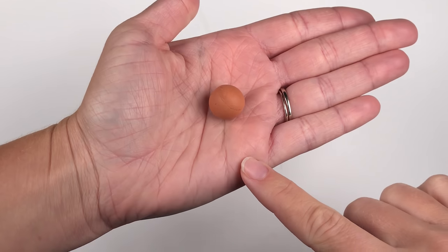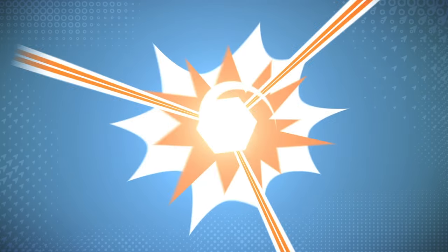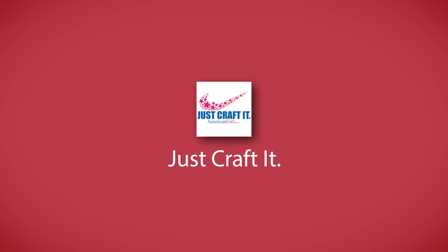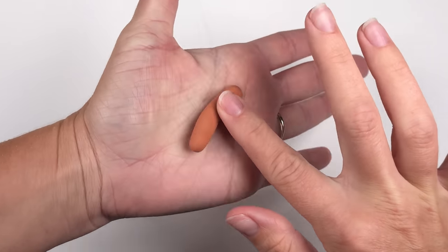Once you've rolled it into a ball, you can take your finger and roll it out to a hot dog shape. Roll it out evenly so it doesn't have a wonky shape to it.